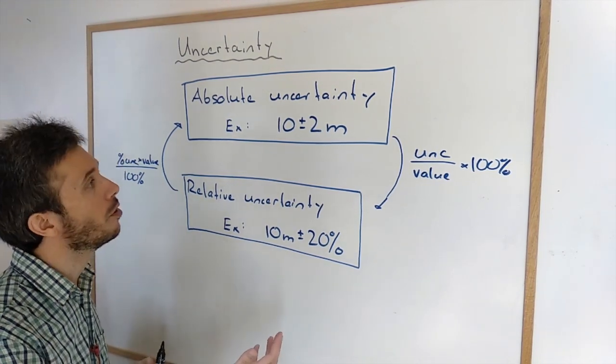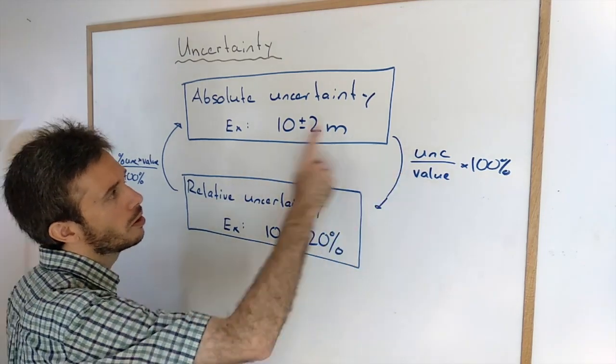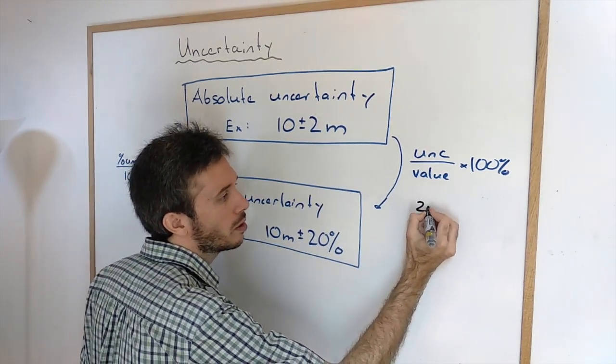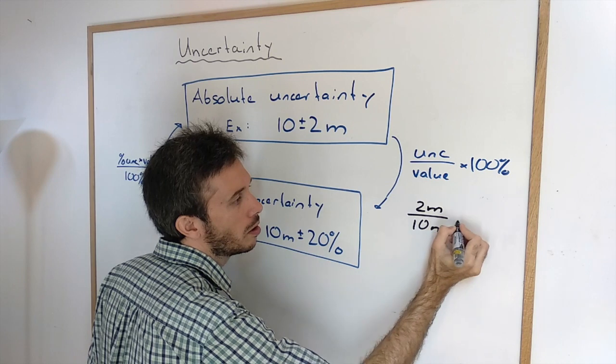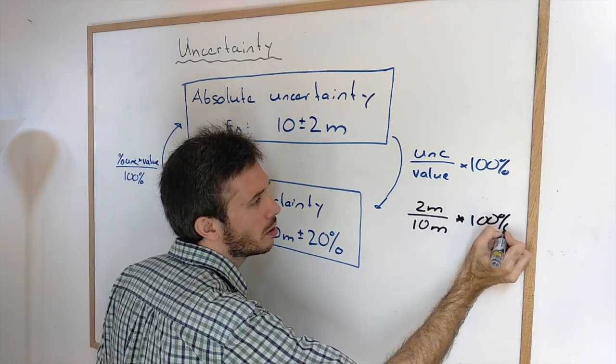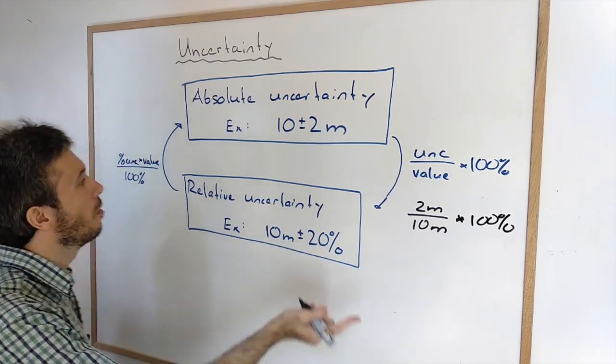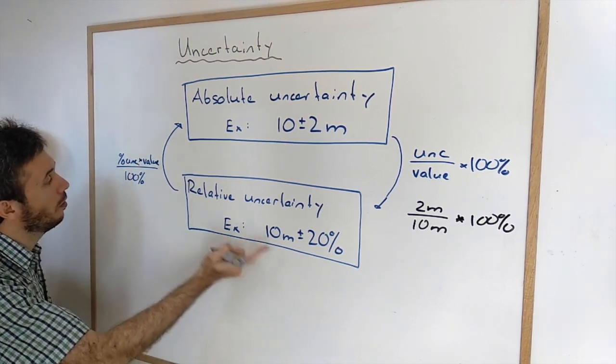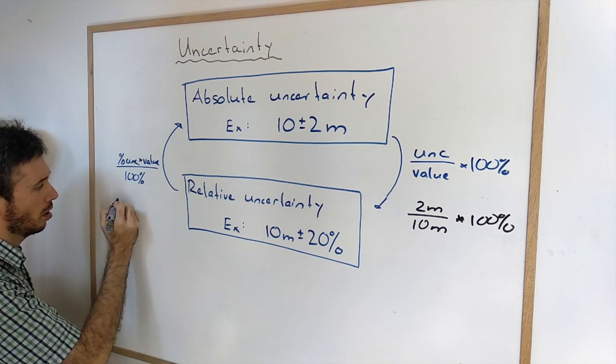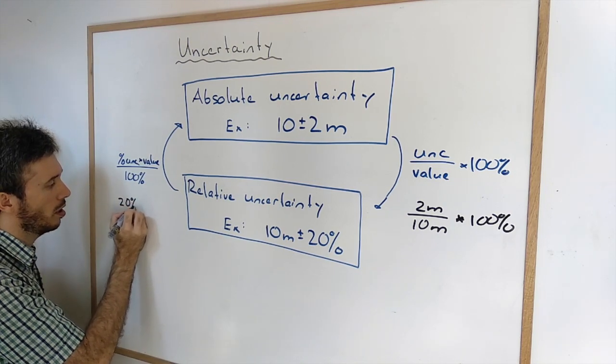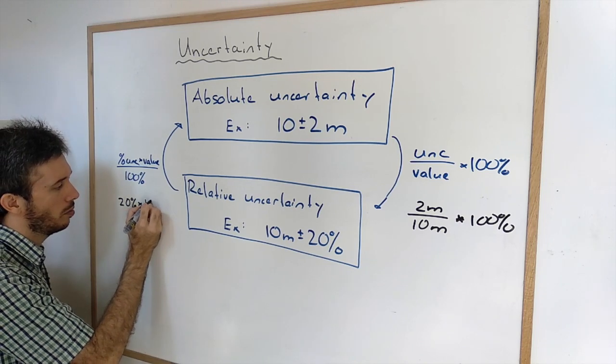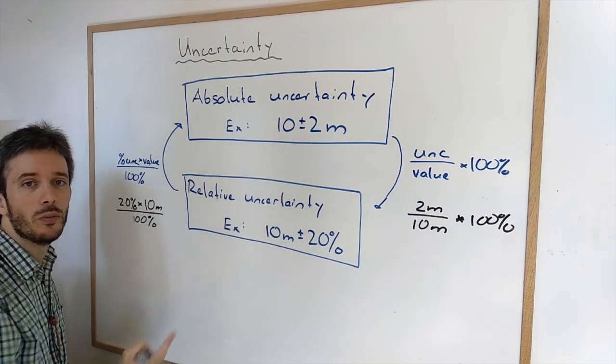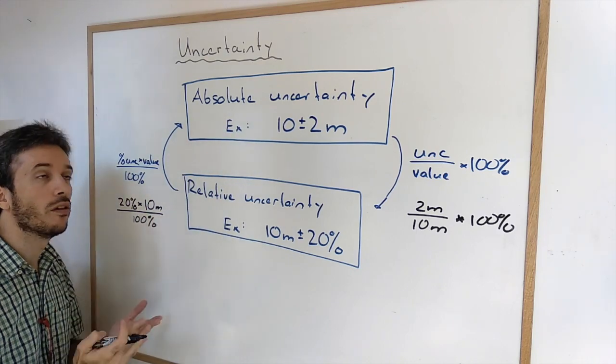How do we convert from one to the other? Well, if you have the absolute uncertainty, you take the uncertainty, you divide it by the value, you multiply it by 100%. For example, here 2 meters over the 10 meters times 100% will give me the 20%. If I want to go the other way around, I take the uncertainty value, multiply it by the value itself and divide by 100%. For example, here I could take 20% times 10 meters over 100%. And what I will get is my 2 meters. So you can easily convert from one to the other.